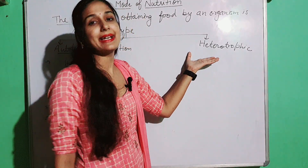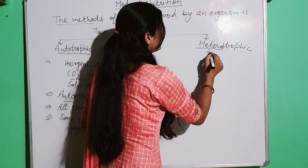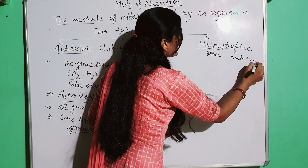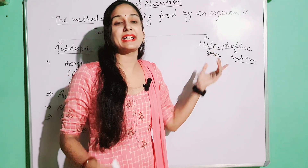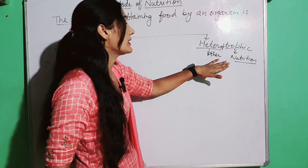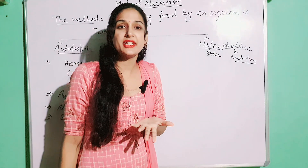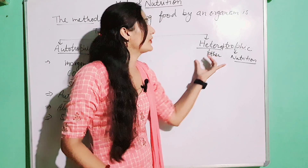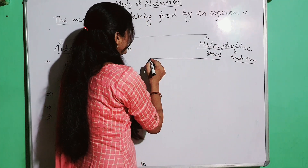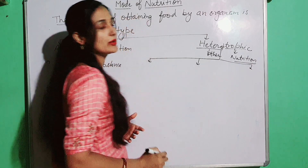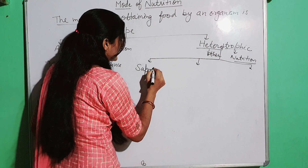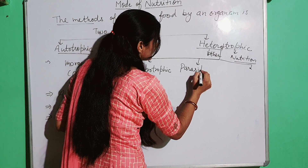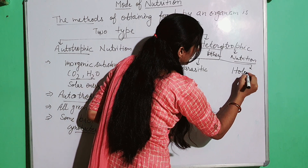What do you mean by heterotrophic mode of nutrition? Hetero means other and trophic means nutrition. It means the mode of nutrition in which living organisms prepare their food with the help of other living organisms. It is further categorized into three types: first is saprotrophic mode of nutrition, second is parasitic mode of nutrition, and third is holozoic mode of nutrition.